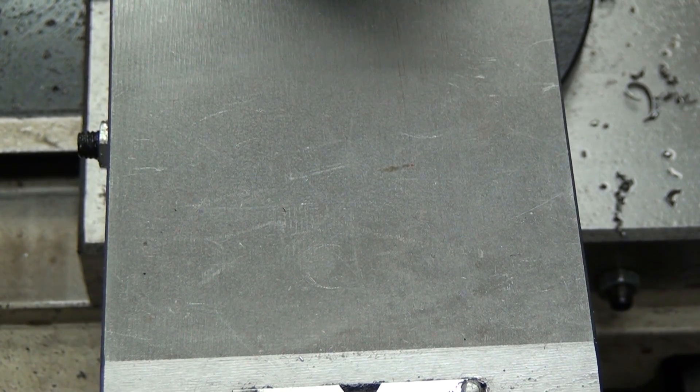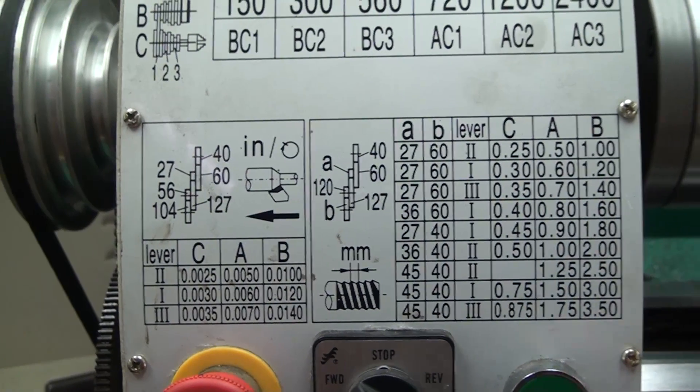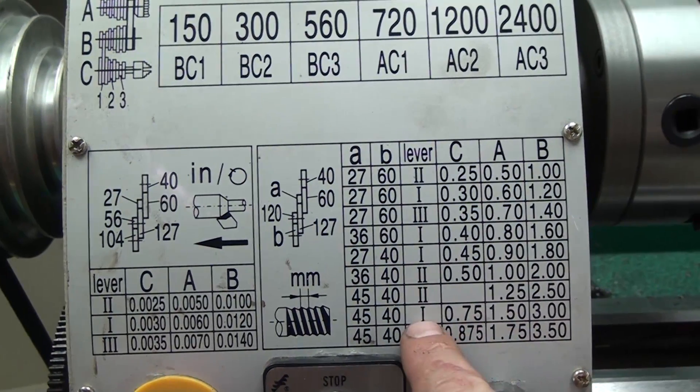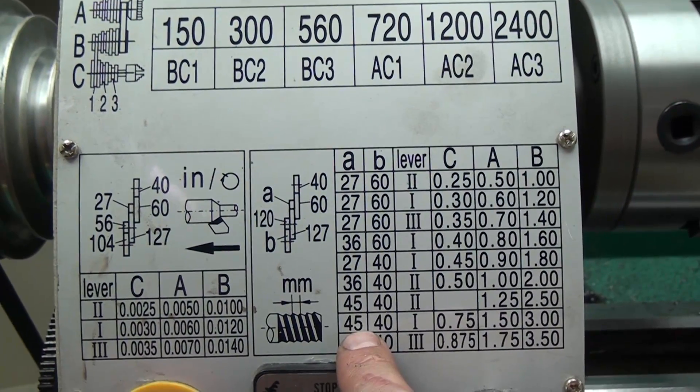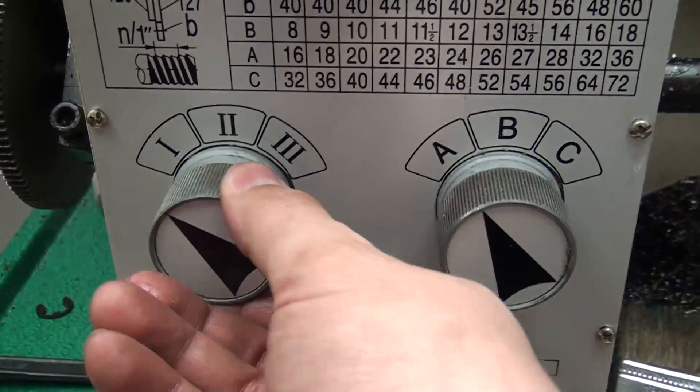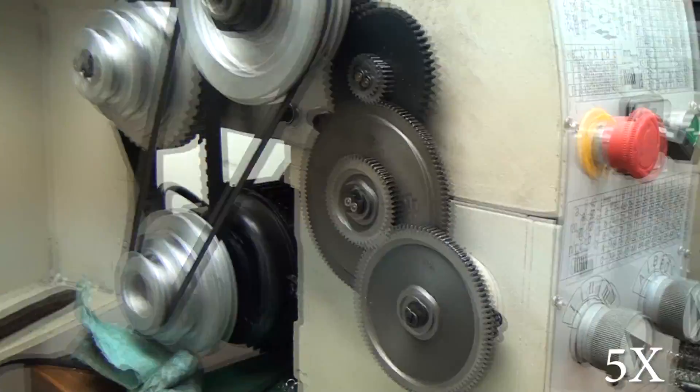We're going to cut 1.5 millimeter threads, which means we need to have the transmission in 1A and use the gears 45 and 40 on the top and bottom respectively. We've already got the transmission in 1A. Let me show you what it looks like taking these gears apart.